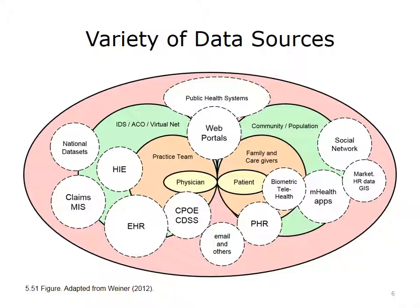Some of these current and potential data sources include insurance claims and management information systems (MIS), health information exchanges (HIEs), EHRs, computerized physician order entry (CPOE), and embedded clinical decision support systems (CDSS), national datasets collected by various federal, state, and non-profit agencies, web portals for patients and families, personal health record (PHR) systems, biometric and telehealth systems, mobile health apps and ecosystems, social networking data, and others such as marketing, human resources, and geo-bound information.